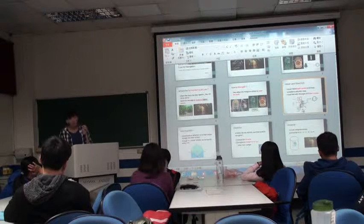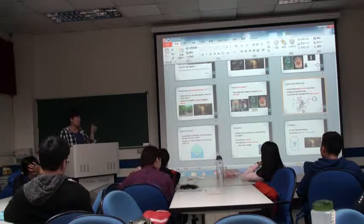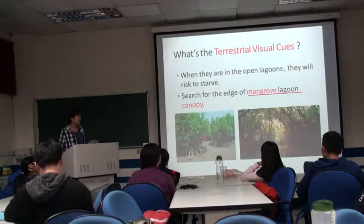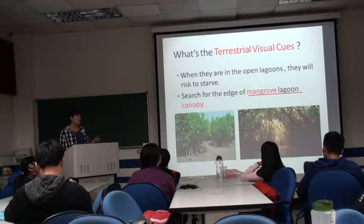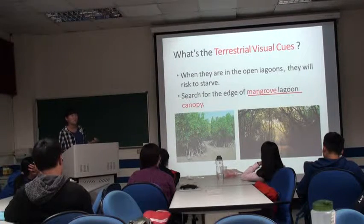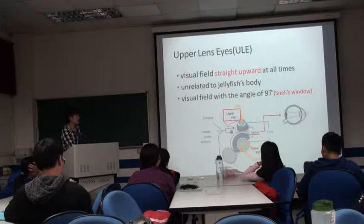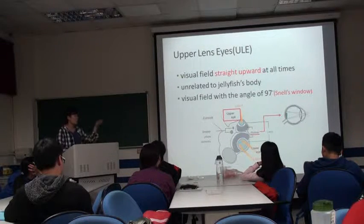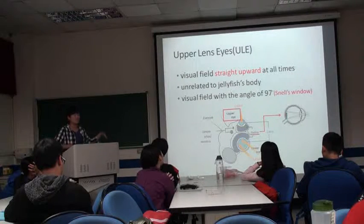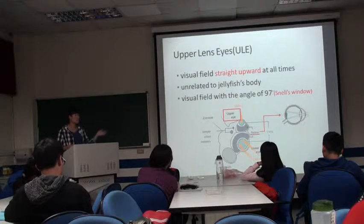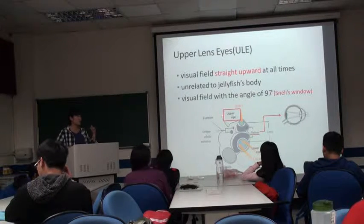A question: how do we know navigation is controlled by the upper lens eyes and not the lower lens eyes? Through the two experiments, we proved they see the mangrove canopy. The upper lens eyes look upward and the lower lens eyes look downward. Because the rhopalia keep their visual field straight upward, the upper lens eyes always point upward, allowing them to see above the water surface.